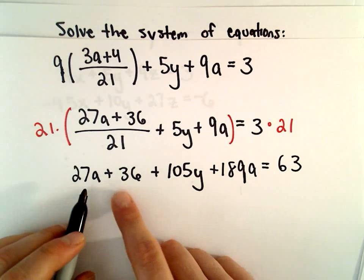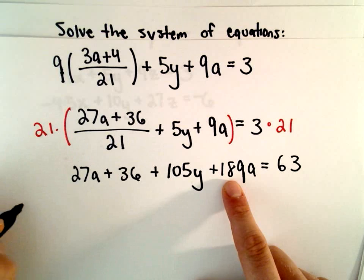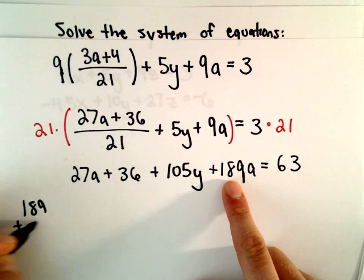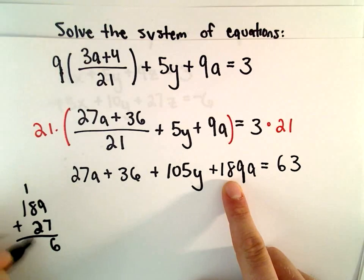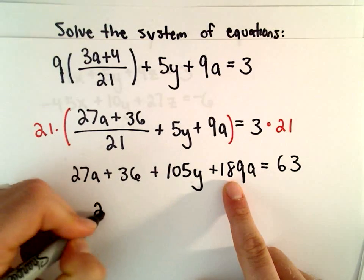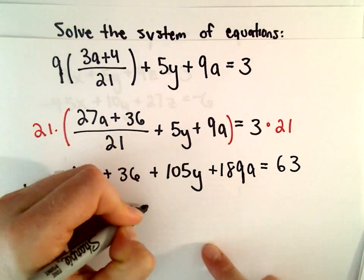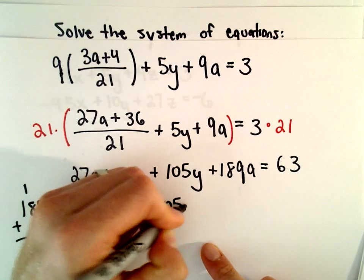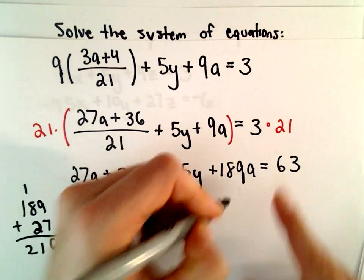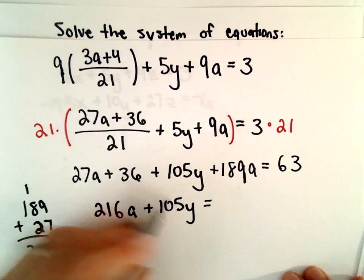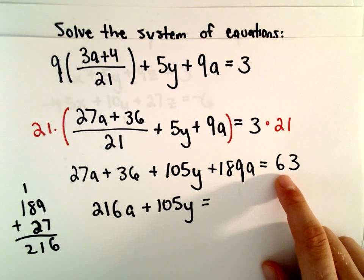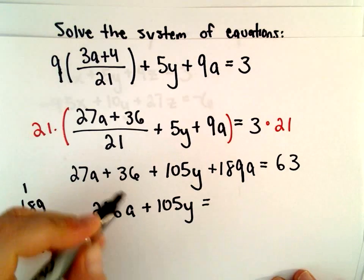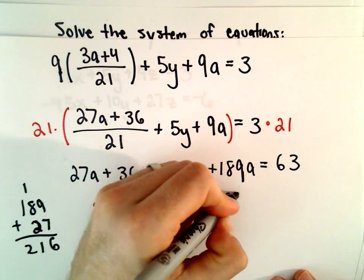We've got 27a and 189a. So 189 and 27. Looks like 216. So we'll have 216a plus 105y. And also I'm going to subtract 36 from both sides. So 63 minus 36. That's going to leave us with positive 27.